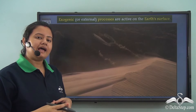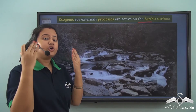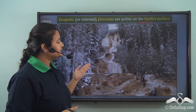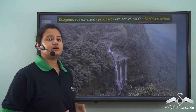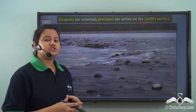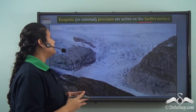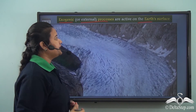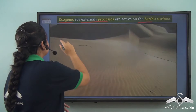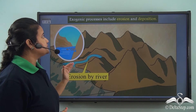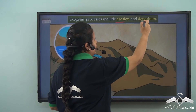Landforms are formed due to natural forces that act on the earth's surface, and these forces can be observed by us. For instance, we can see strong winds blowing over vast stretches of barren lands, rivers tumbling down rocky surfaces, and glaciers moving over valleys. All these forces act on the earth's surface and are known as exogenic or external processes, and these processes are responsible for forming different landforms.